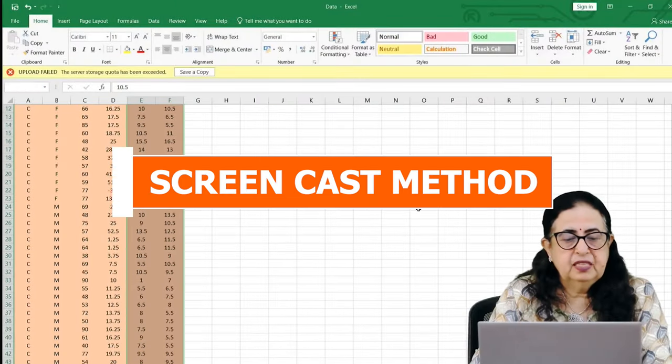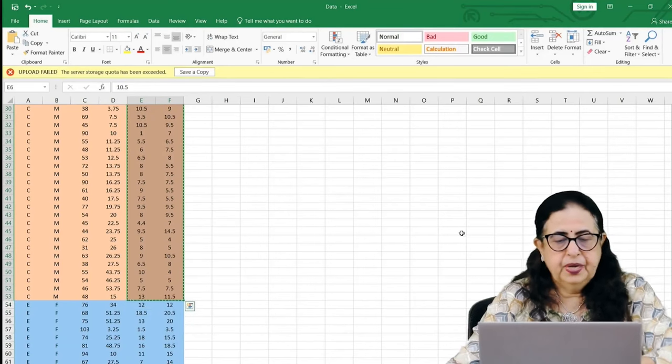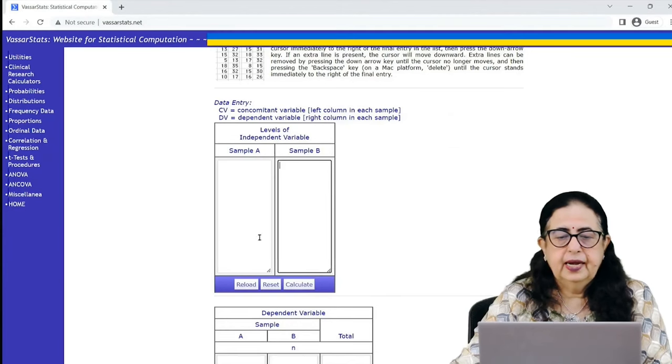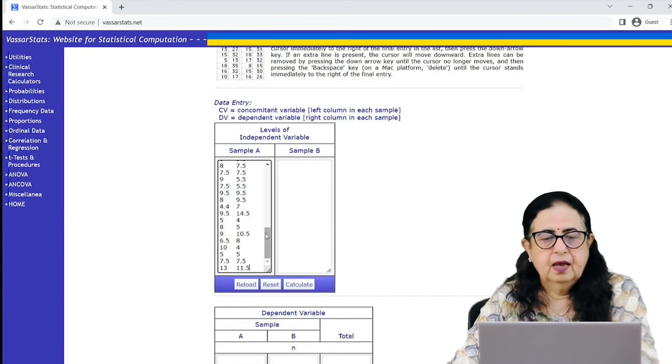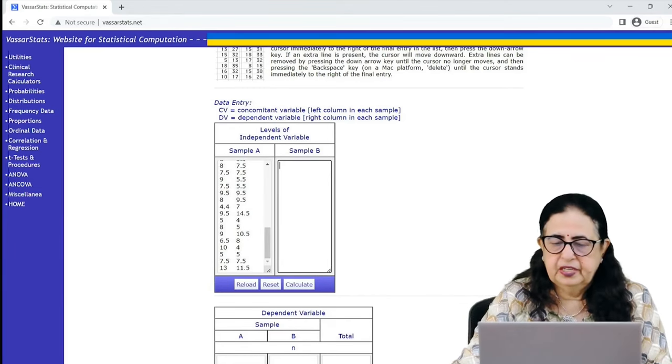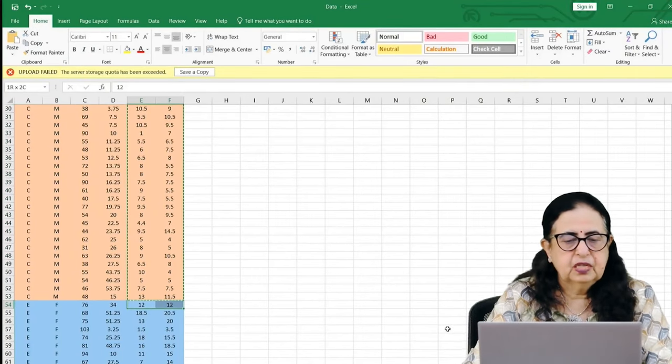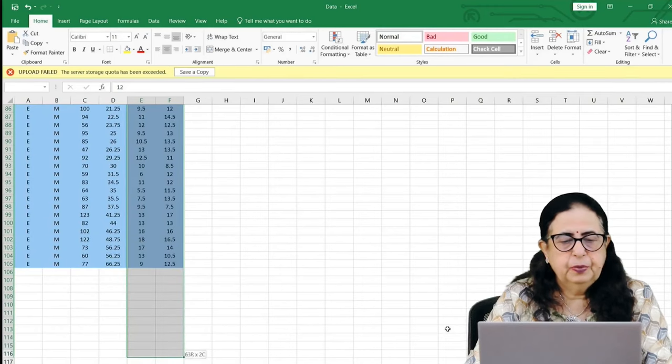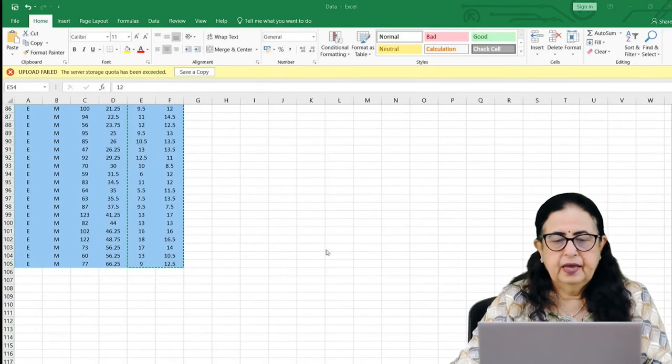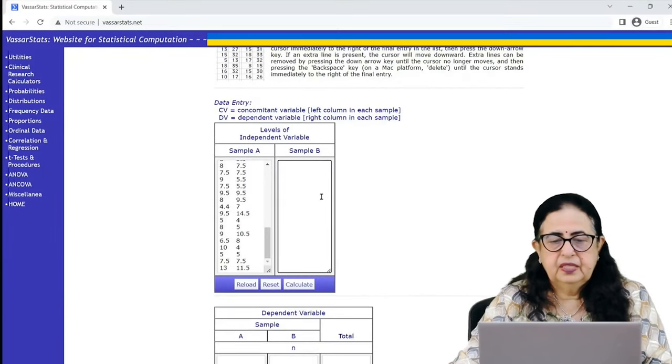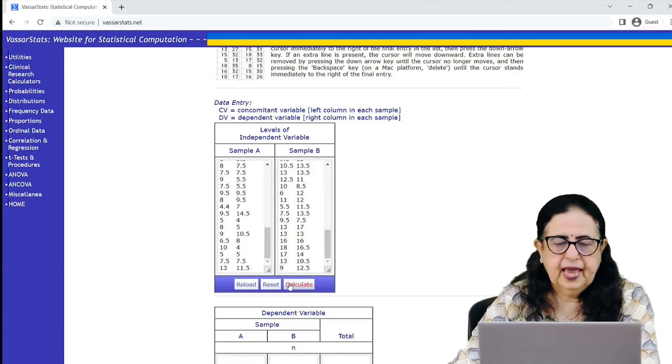Pre- and post-test together only for experimental control group. I copy and I paste it for sample A. Then I go to my excel sheet again. I take scores on pre-test and post-test together. Now, only for experimental group. I copy and I paste it here. I calculate.